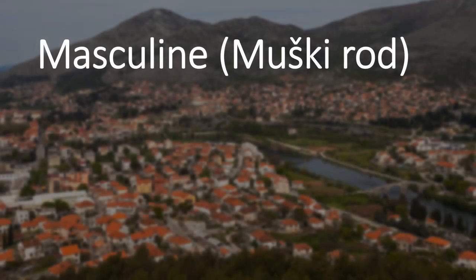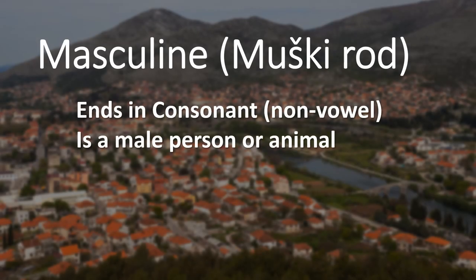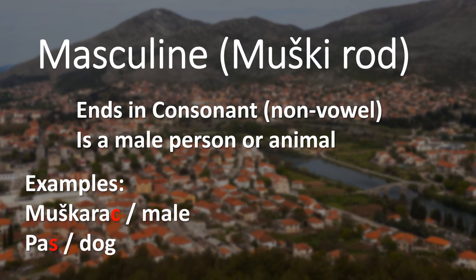Masculine, or muški rod, ends in a consonant — it's a non-vowel ending. It usually refers to a person's name, an animal, or any other object that ends in a consonant. Examples would be muškarac, meaning male, or pas, meaning dog.